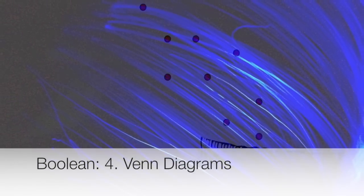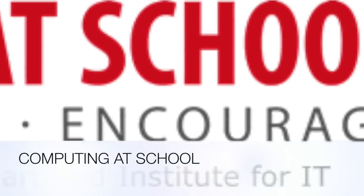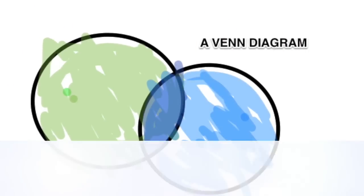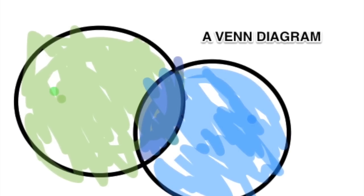In this video, we're going to look at the pictorial representation of Boolean relationships, known as Venn diagrams. These are useful not only as a form of simplification, but also as direct practice in logical thinking.